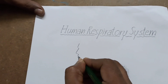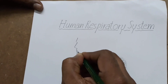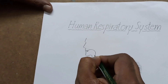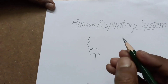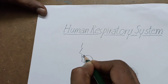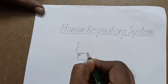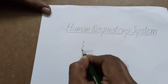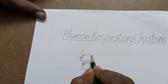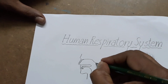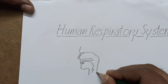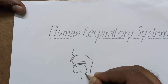Now we have to draw the respiratory system. Let's start with the lower lip, teeth, tongue, epiglottis. Then the upper lip, palate, and nasal cavity — draw the nasal cavity like this, down here.